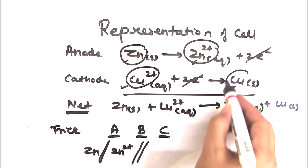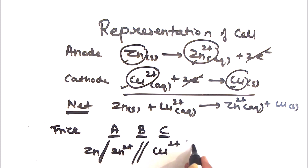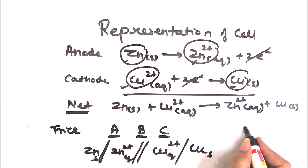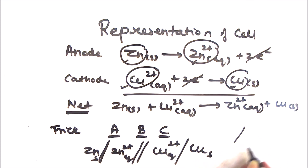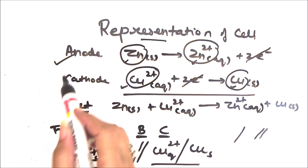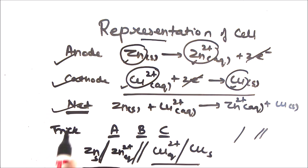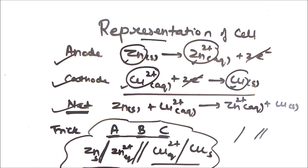The single slash represents the interface between solid and aqueous phases, and the double slash represents the salt bridge. So the cell representation is: Zn(s) | Zn²⁺(aq) || Cu²⁺(aq) | Cu(s). First write the anode, then the cathode, using single slashes for phase interfaces and a double slash for the salt bridge. By summing the half-cell equations you get the net equation, and from that you can also write the cell representation. The ABC trick — Anode, salt Bridge, Cathode — is a helpful way to remember the order.